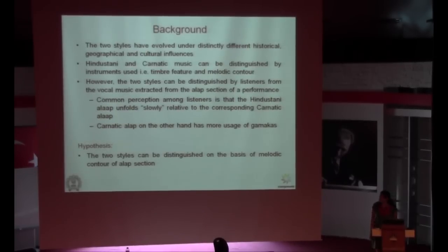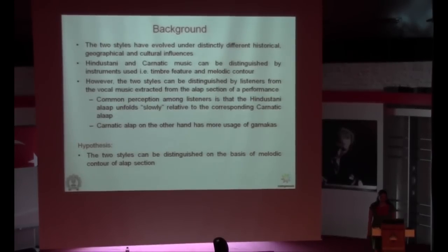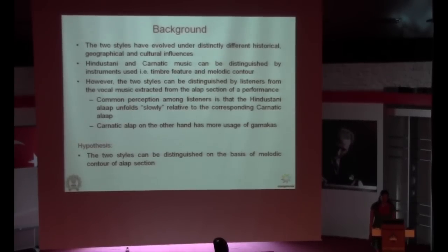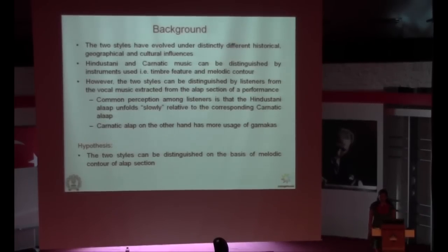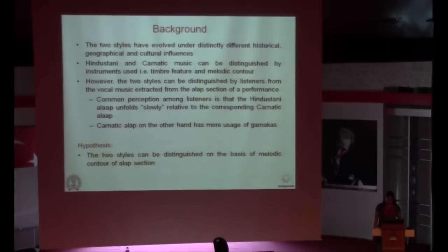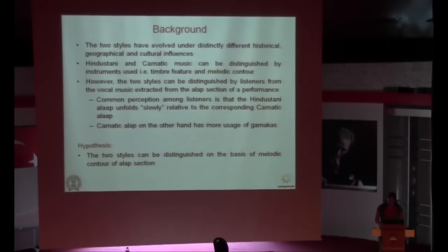As we all know, the two styles have evolved in distinct historical and geographical backgrounds. Any Indian classical music listener can distinguish the two concerts on the basis of instruments used in the performance and the melodic contour. A common perception is that in the alap section — the non-metered portion at the beginning of the concert — the music unfolds slowly for Hindustani style, while Carnatic alap has more usage of gamakas. Our hypothesis is that the two styles can be distinguished on the basis of the melodic contour of the alap section.